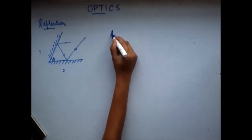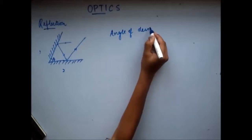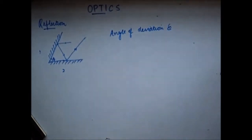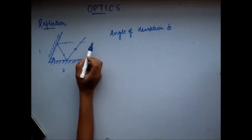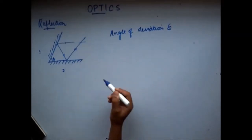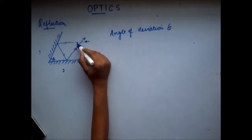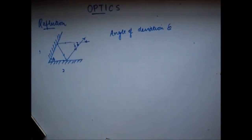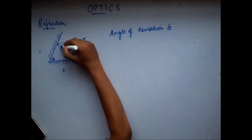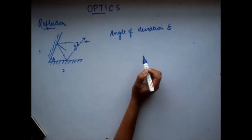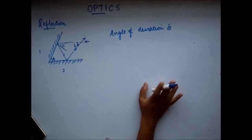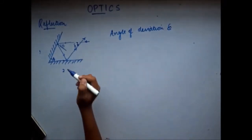The question asks: what is the angle of deviation of the incident ray? The angle of deviation is the angle through which you need to turn the incident ray to get the final reflected ray. The angle of incidence on the first mirror is theta. Pause and try this question on your own. Now let's proceed with the solution.